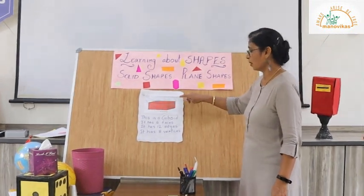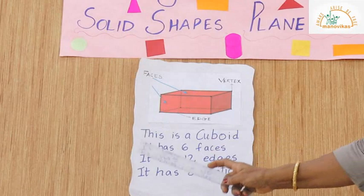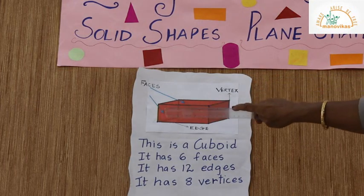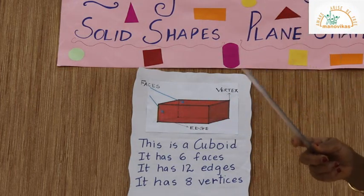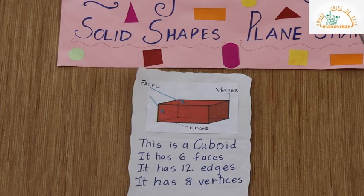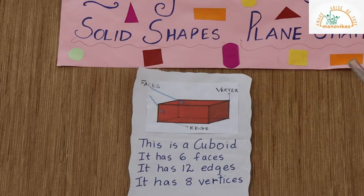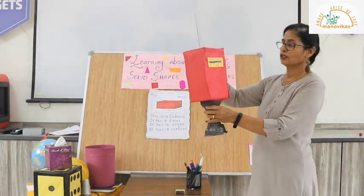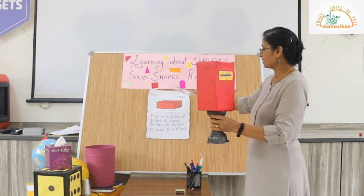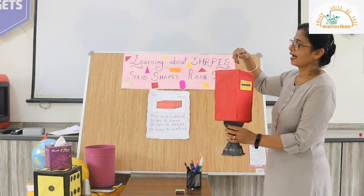A second solid shape is a cuboid. A cuboid has six faces, twelve edges, and eight vertices. The faces of a cuboid are rectangular in shape — they are rectangles. In a cube the faces are square, but in a cuboid the faces are rectangles. Here is an example of a cuboid — the post box is cuboid in shape.